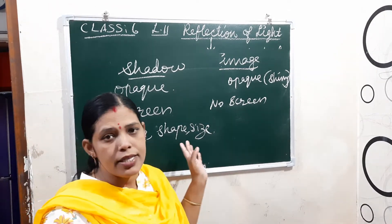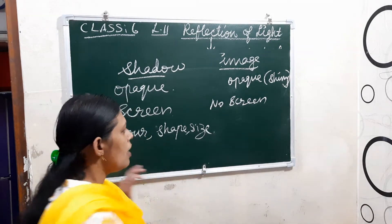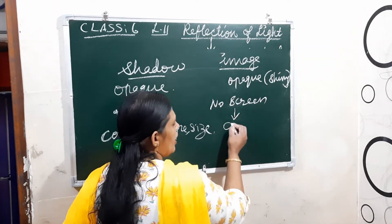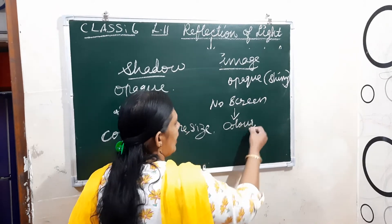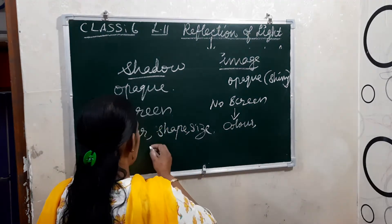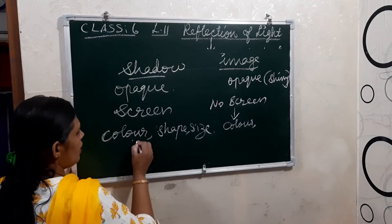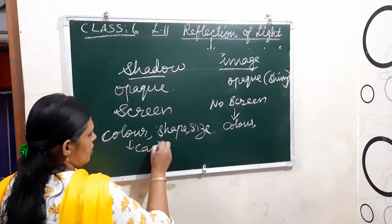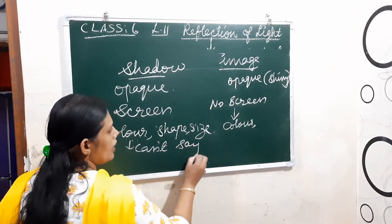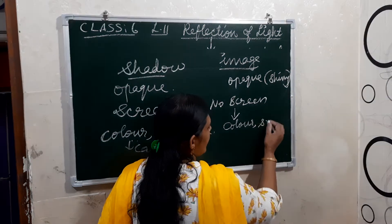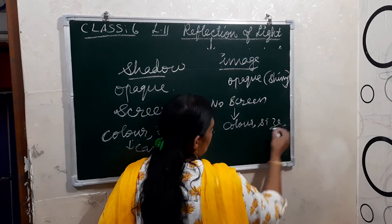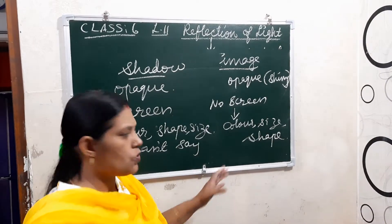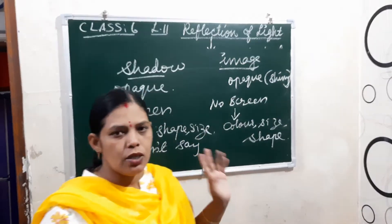In a shadow, the color is always black. But in an image, you can say the color, size, and shape of the object — it appears exactly as it is. That is the difference with an image.